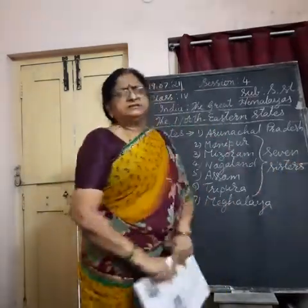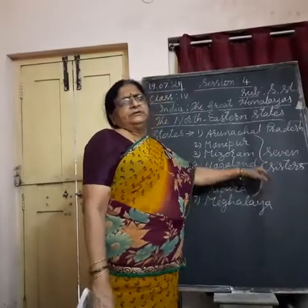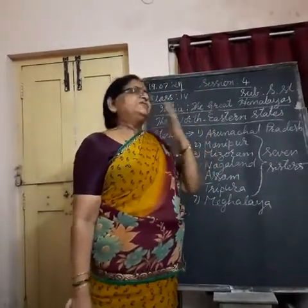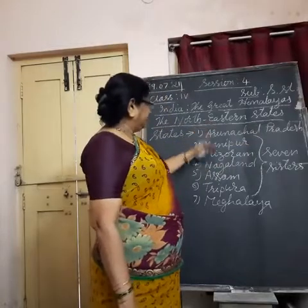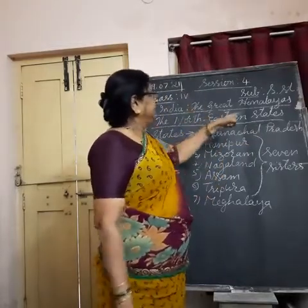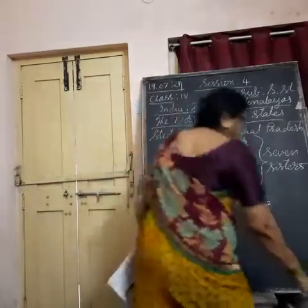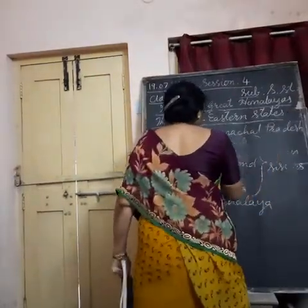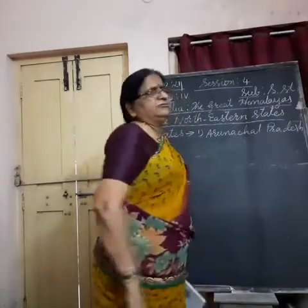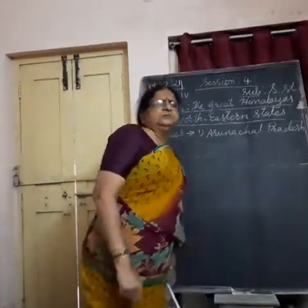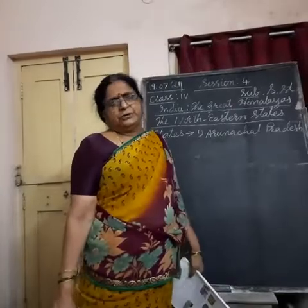These are the seven states located in the Himalayan region. They are very small states. All seven northeastern states are together called seven sisters — they are very small and some of their traditions and culture match each other. Now we are going to study about them one by one: their capital, climate, crops, dressing of the people, food habits, important occupations, and what each state is famous for.